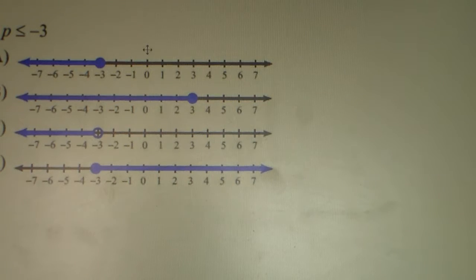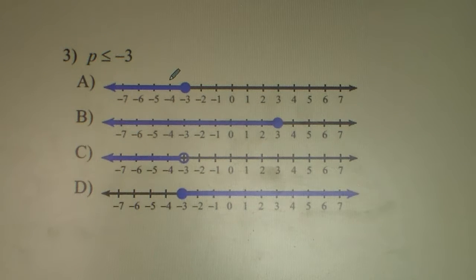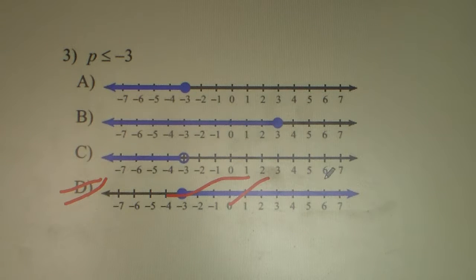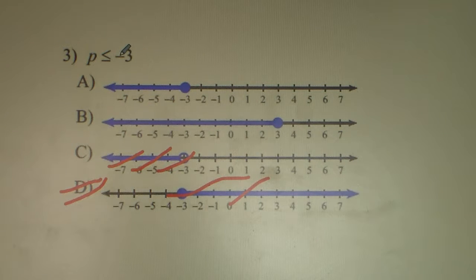Next up is number 3. It says P is less than or equal to negative 3. Less than is to the left, so we can cross out D — D is incorrect. Our arrow's going to the left. Less than or equal to is a closed circle, so the open circle option is definitely not correct. Since we're talking about negative 3, not positive 3, the answer to number 3 is A.